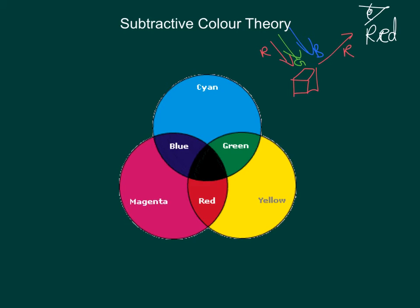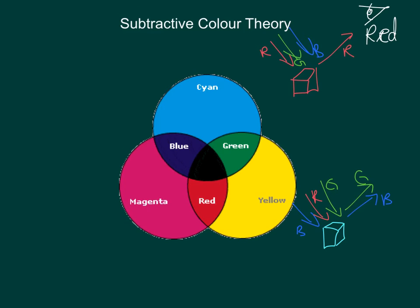This holds true for an object made up of a combination of colors as well. For instance, if we have a cyan object, white light hits it. The only things that can bounce off are what the object's color is made of. Since cyan is a combination of green and blue, the green and blue light are going to reflect off of it. It's going to absorb or subtract the red wavelengths. That means our eye looking at this object is going to see cyan.